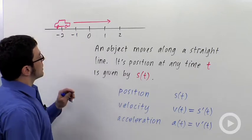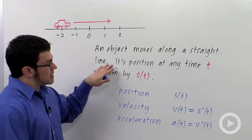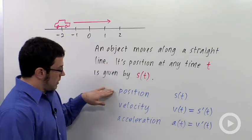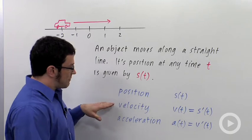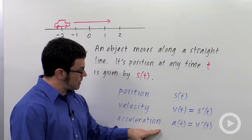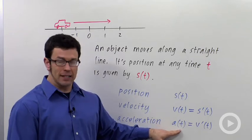Imagine an object that's moving along a straight line. If we know that its position at any time t is s(t), here's its position s(t), its velocity v(t) is the derivative of s(t), and its acceleration is the derivative of velocity.